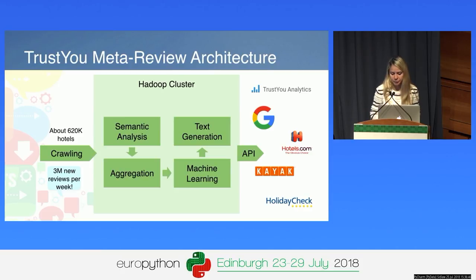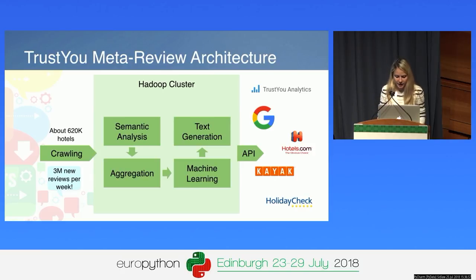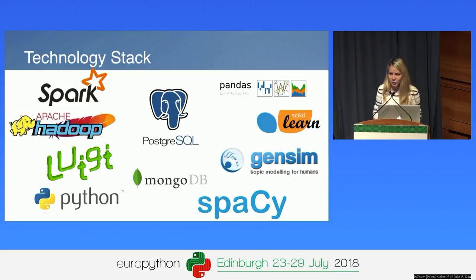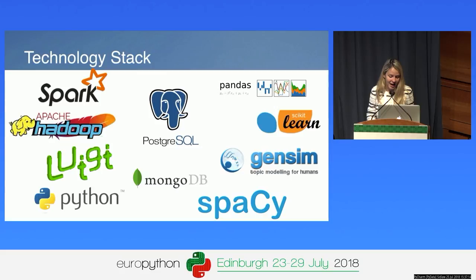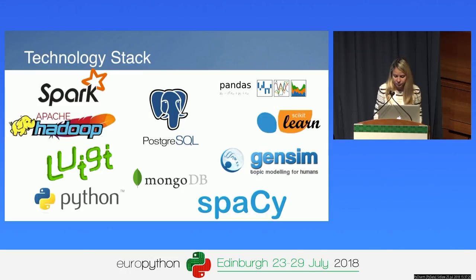In the end, we generate the text that you saw before, and we provide this text on our website, but also to Google, Kayak, Hotels.com, HolidayCheck, and several other websites. Just to give you an overview of the technologies we use to build a meta review: almost all of the code we write is written in Python — that's why I'm presenting this here. We use Luigi for our pipelines, Hadoop and Spark for processing the large amount of data, and PostgreSQL and MongoDB as databases. On the right are some of the libraries we use for machine learning.